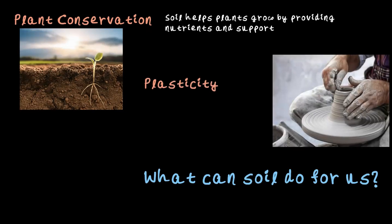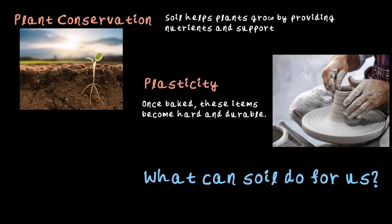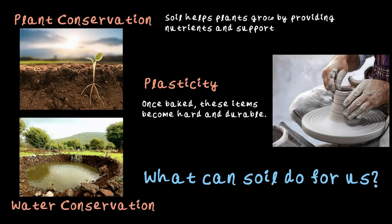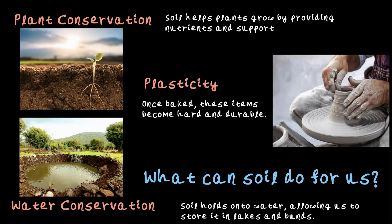Next is plasticity — one of the most interesting traits of soil. You can add a little water and shape it into just about anything: earthen pots, bricks, lamps, or even statues. Once baked, these creations become hard and durable, lasting for years. And lastly, water conservation — soil has the ability to hold water, storing it in lakes, ponds, and bunds so that we can use it throughout the year. Soil is not just something beneath our feet; it is working wonders for us every single day.